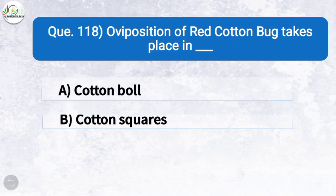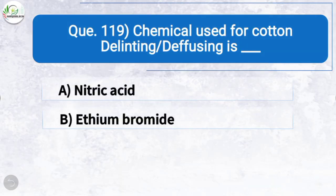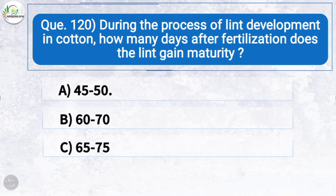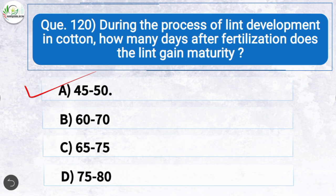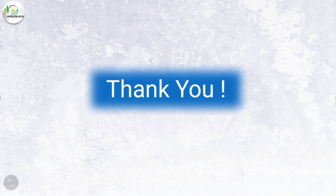Question one hundred and eighteen: Oviposition of red cotton bug takes place in — the correct answer is option C: moist soil. Question one hundred and nineteen: Chemical used for cotton delinting is — the correct answer is option C: concentrated sulfuric acid. Question one hundred and twenty: During the process of lint development in cotton, how many days after fertilization does the lint gain maturity? The correct answer is option A: 45 to 50 days. Thank you friends for watching our video — hope you find it useful. Please subscribe to our YouTube channel for more such videos.